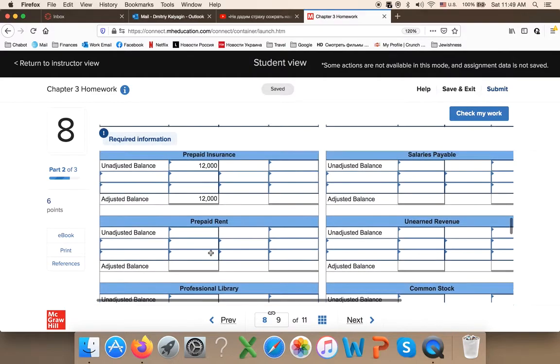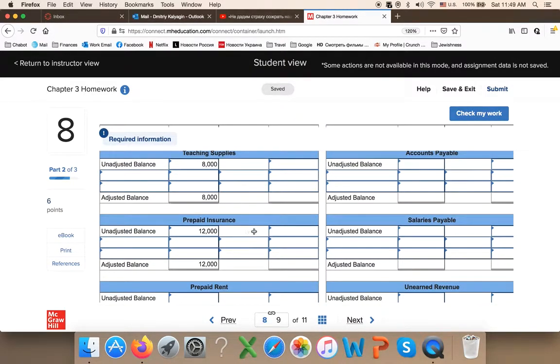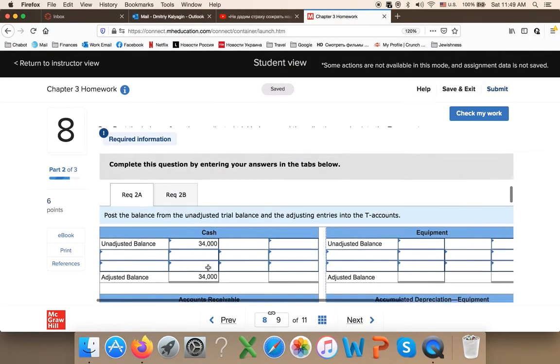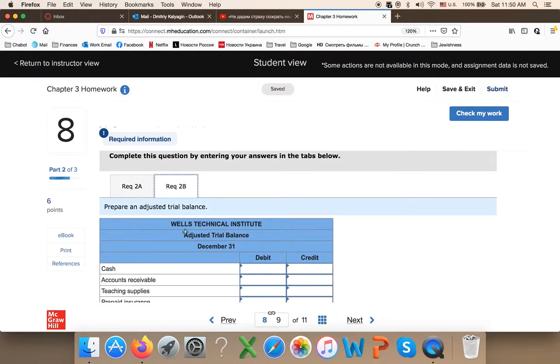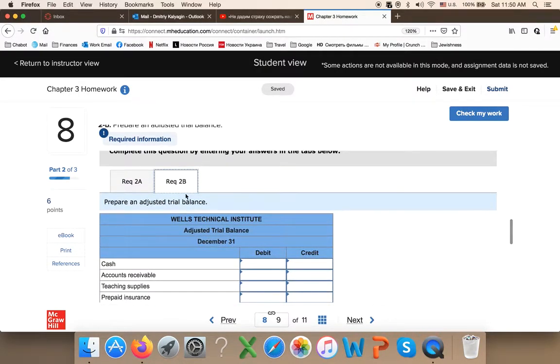You also post the credit to prepaid insurance, it goes right here. 2400, letter A goes right here, the amount goes right here. So we had twelve thousand dollars in prepaid insurance, we move 2400 to expense, so the remaining adjusted balance is 9600. And so you do it for every account, for every adjustment. After you're done, you take adjusted balances from each account and put them together in requirement 2b for your adjusted trial balance.